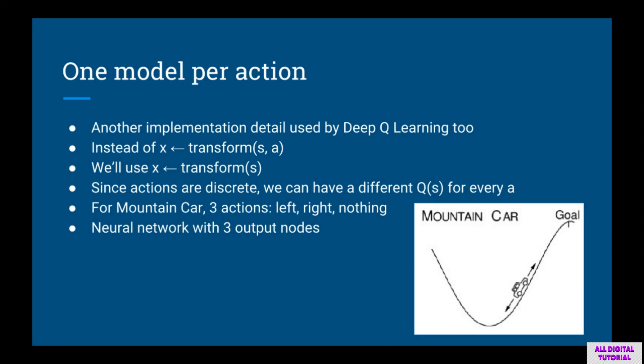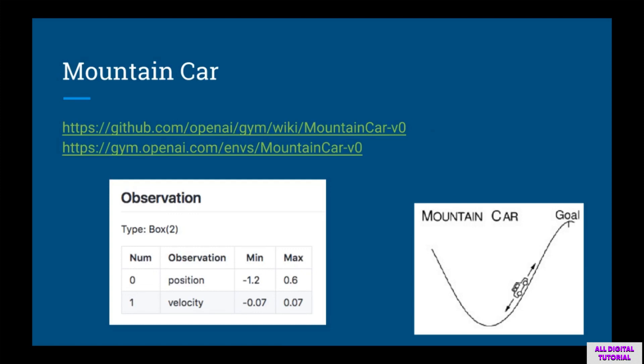Another implementation detail used by Deep Q-Learning: instead of trying to model Q with X as input (some feature transformation on state S and action A), we'll make X just the transformation of state S. Since actions are discrete, we create a different linear model for each action. In Mountain Car with three actions — left, right, and do nothing — we'll have three linear models each giving Q for a separate action. Another way to think about this is as a neural network with three output nodes. This is exactly the approach we'll take in Deep Q-Learning.